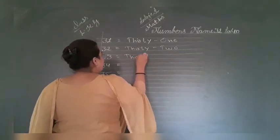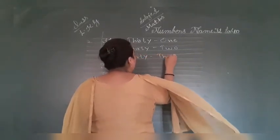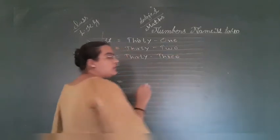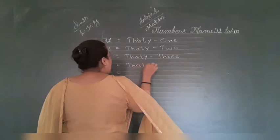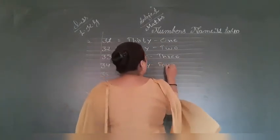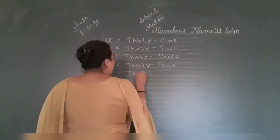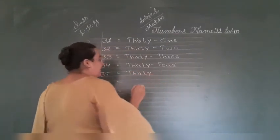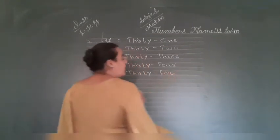THIRTY 30. 33, THIRTY 30, FOUR 4, 34. THIRTY 30, FIVE 5, 35.